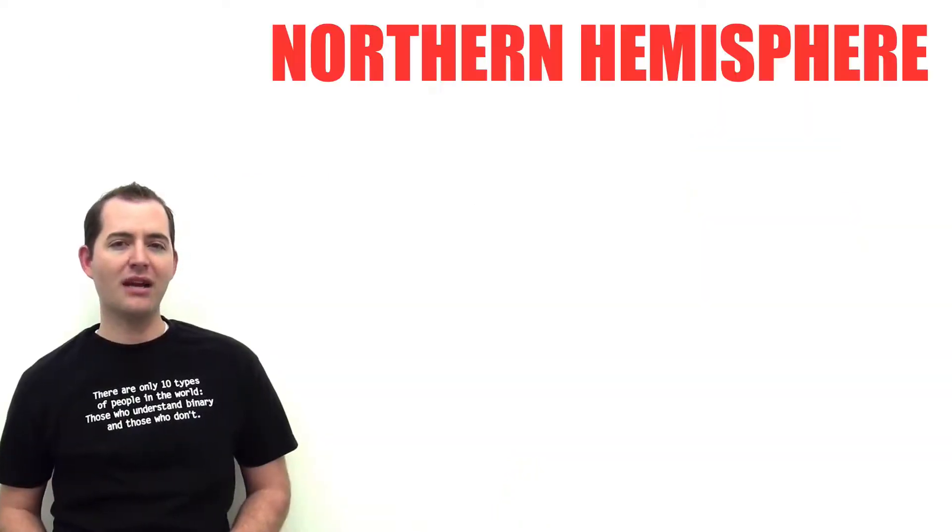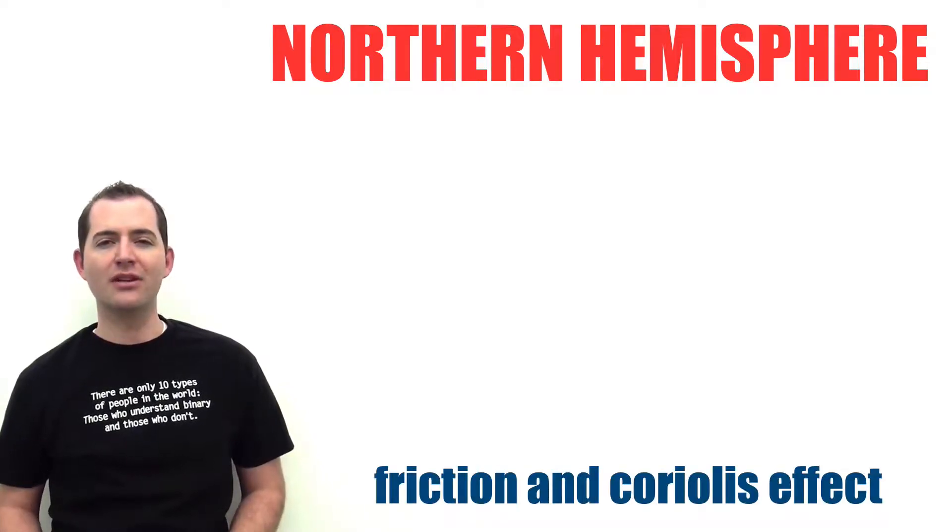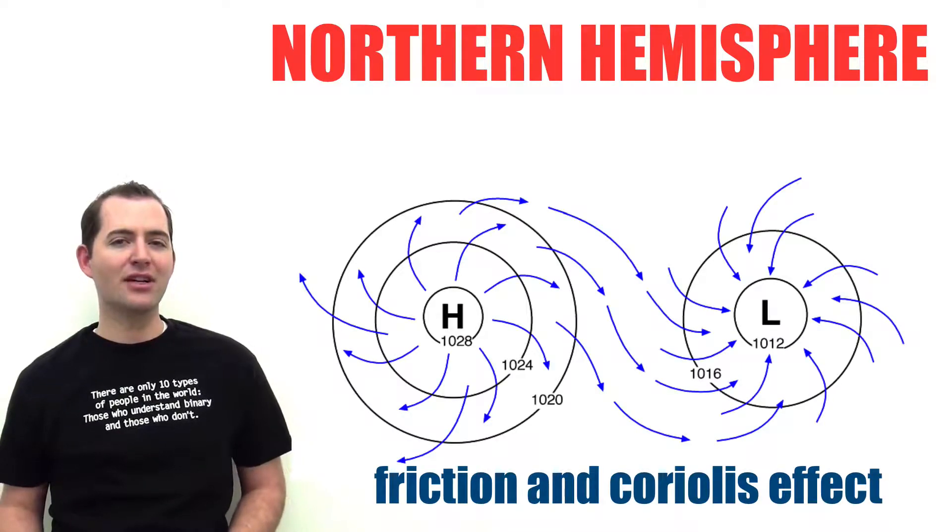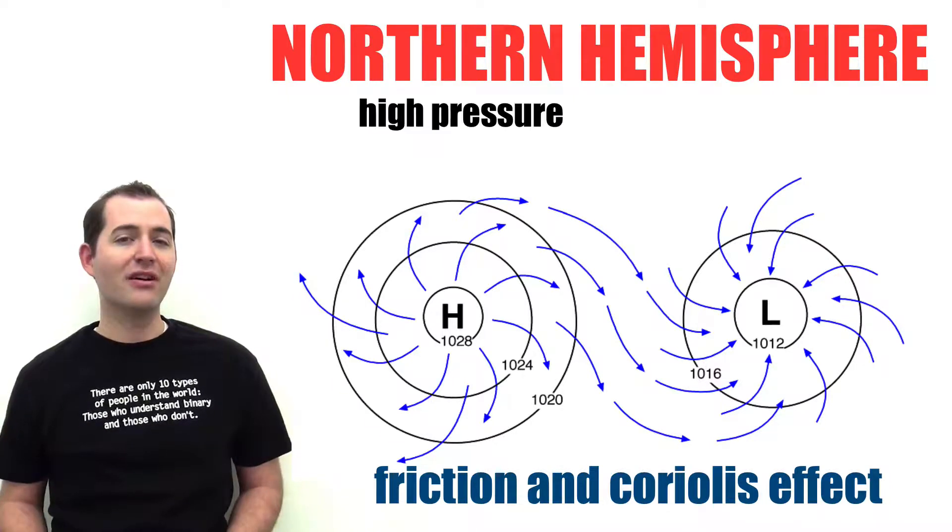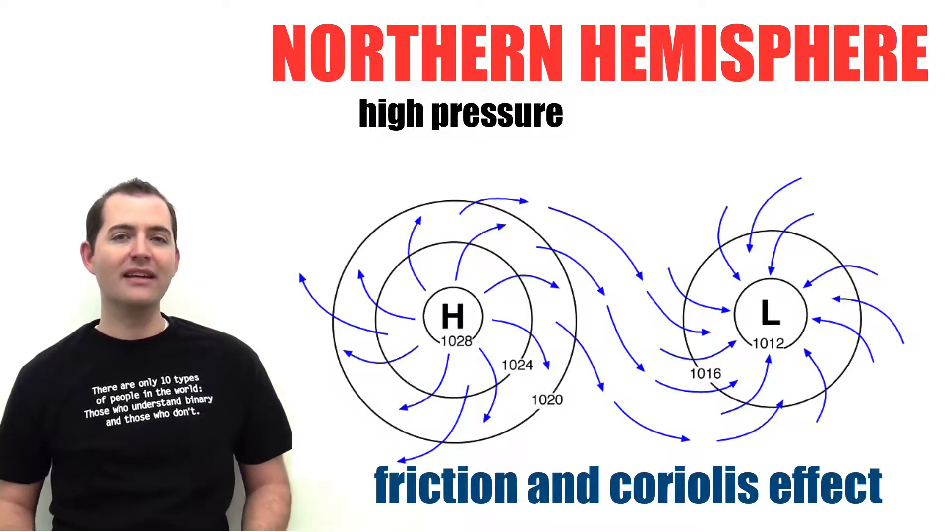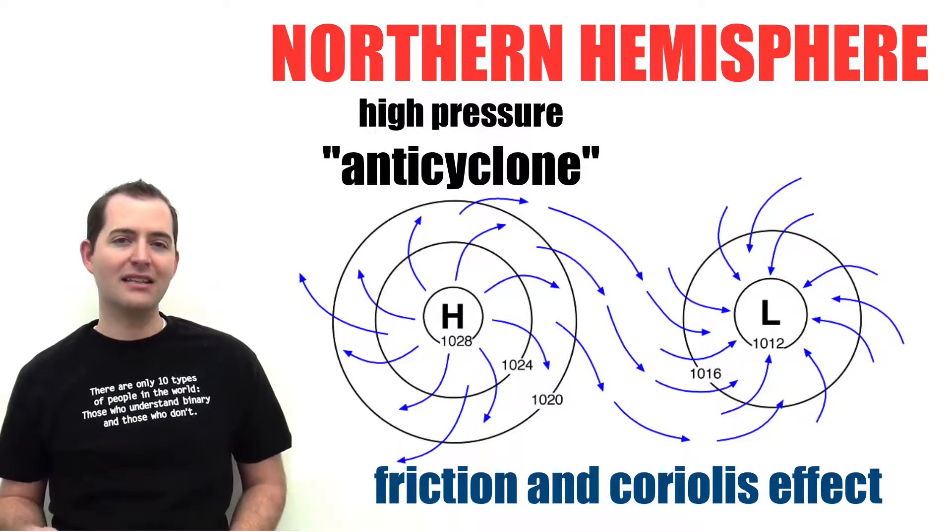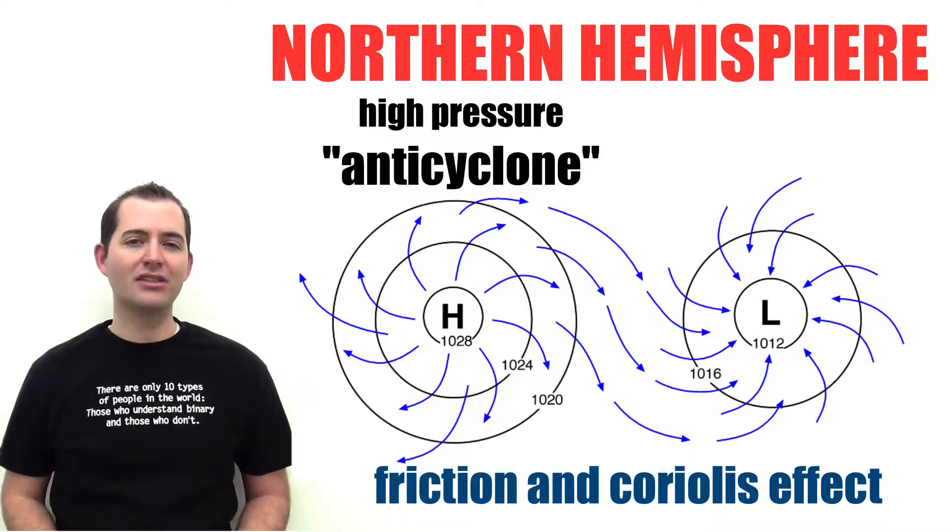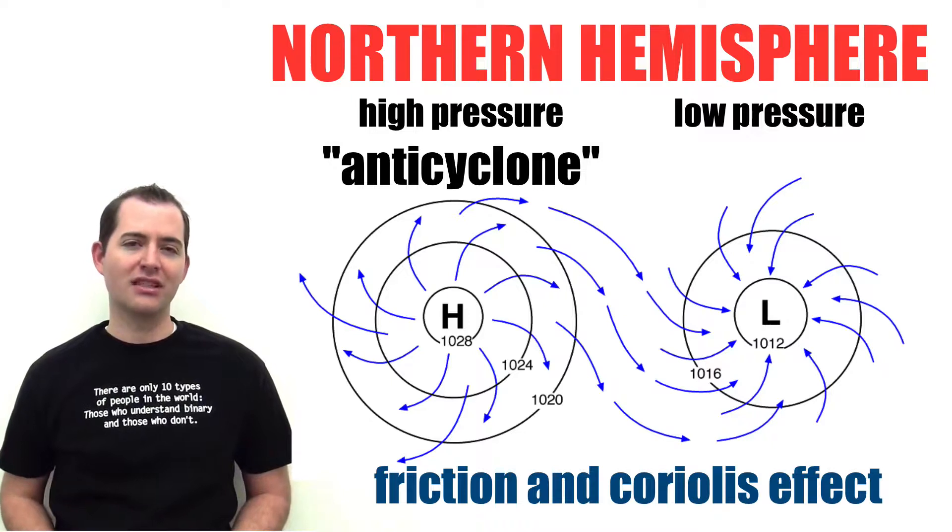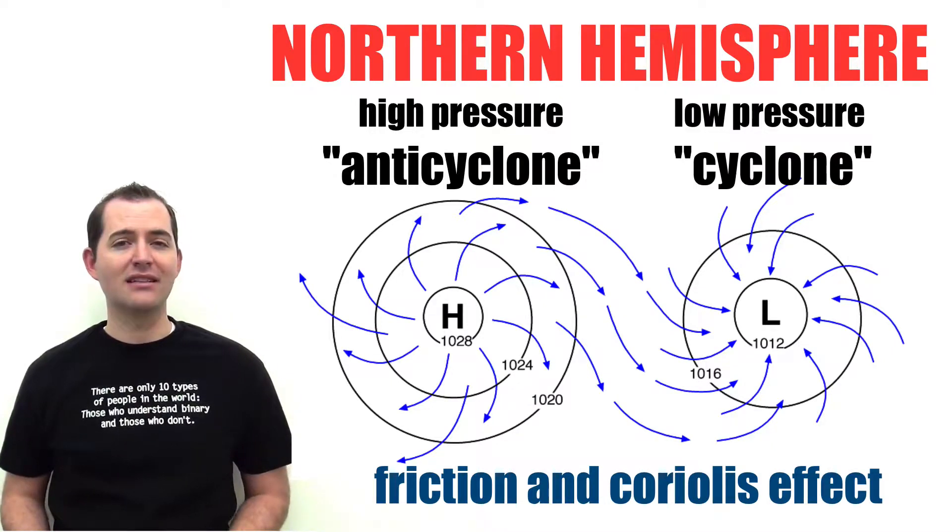In the Northern Hemisphere, the combination of friction and the Coriolis force make winds diverge in a clockwise direction out of high-pressure centers, also known as anti-cyclones. These same forces make surface winds converge in a counterclockwise direction at low-pressure centers, known as cyclones.